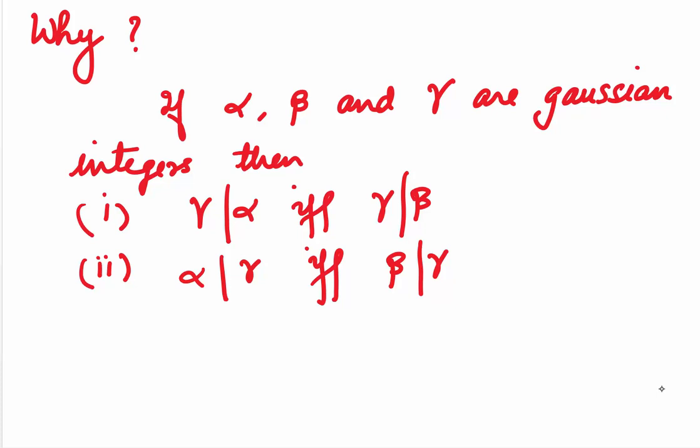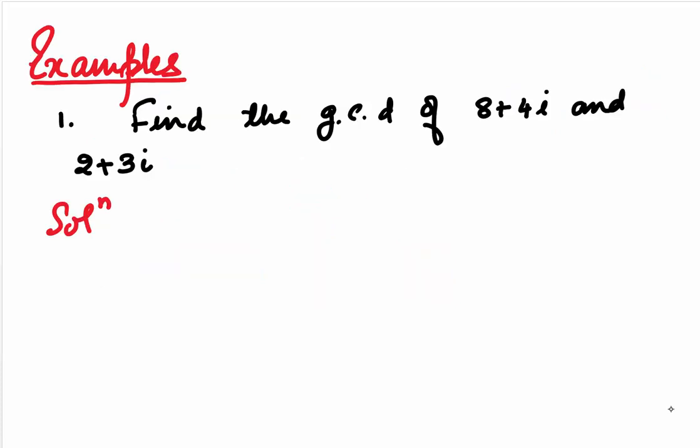If alpha, beta and gamma are Gaussian integers, then gamma will divide alpha if and only if gamma divides the associate beta. And if alpha divides gamma, this will happen if and only if beta divides gamma. Based on these two results, you can see that all the associates are the GCD.